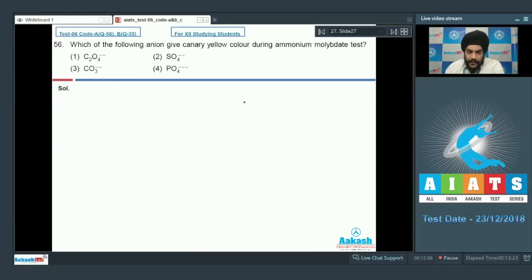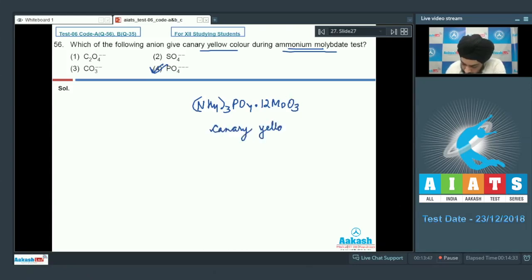Question number 56: which of the following anion gives canary yellow color during the ammonium molybdate test? The correct answer is phosphate ion, which leads to the formation of ammonium phosphomolybdate, which is a canary yellow precipitate. The correct answer to question 56 is option 4.